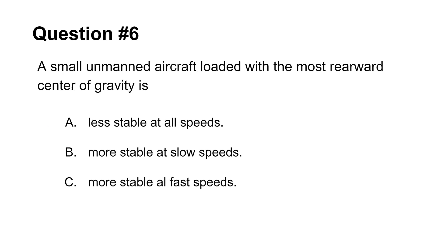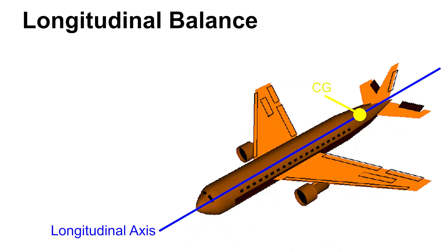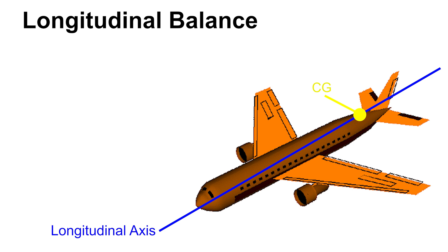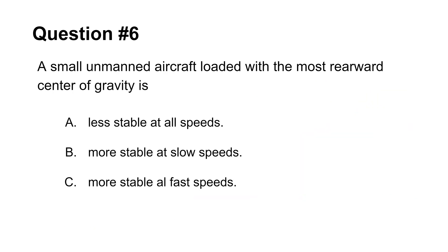The next question tests your knowledge of longitudinal balance. If the center of gravity is located too far back of the aircraft, this will produce upward pitching force. The pilot controls the aircraft's pitching motion with elevator. If the elevator cannot counter the moment from the most rearward center of gravity, the flight is unstable at all speeds. This makes choice A the answer.